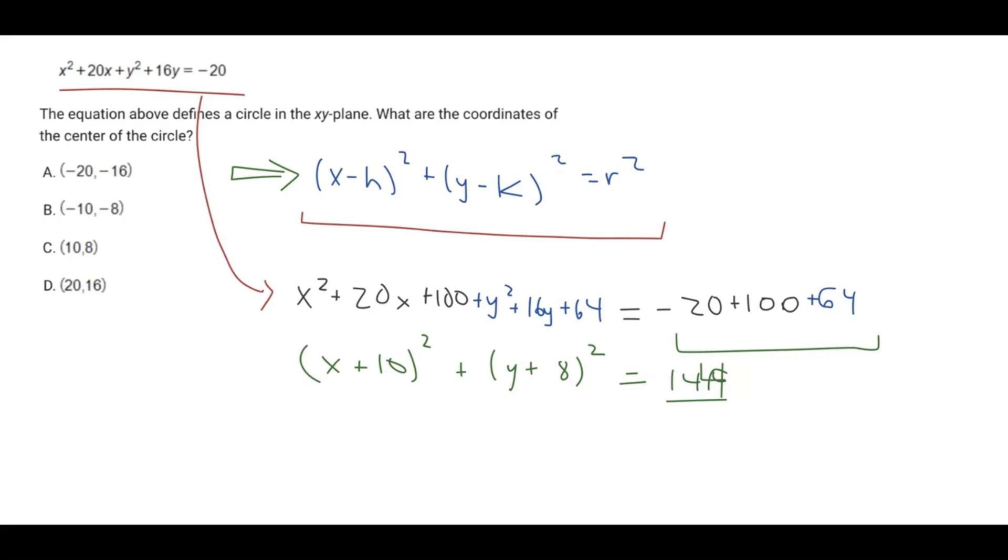So we know that it can't be any of these. It can't be 20 and 16. So is it positive or negative? Well, in our actual equation, it's positive 10 and positive 8. Does that mean those are the coordinates of the center of the circle? Well, no, because if we have a positive here, what that means is that h is negative and k is negative.